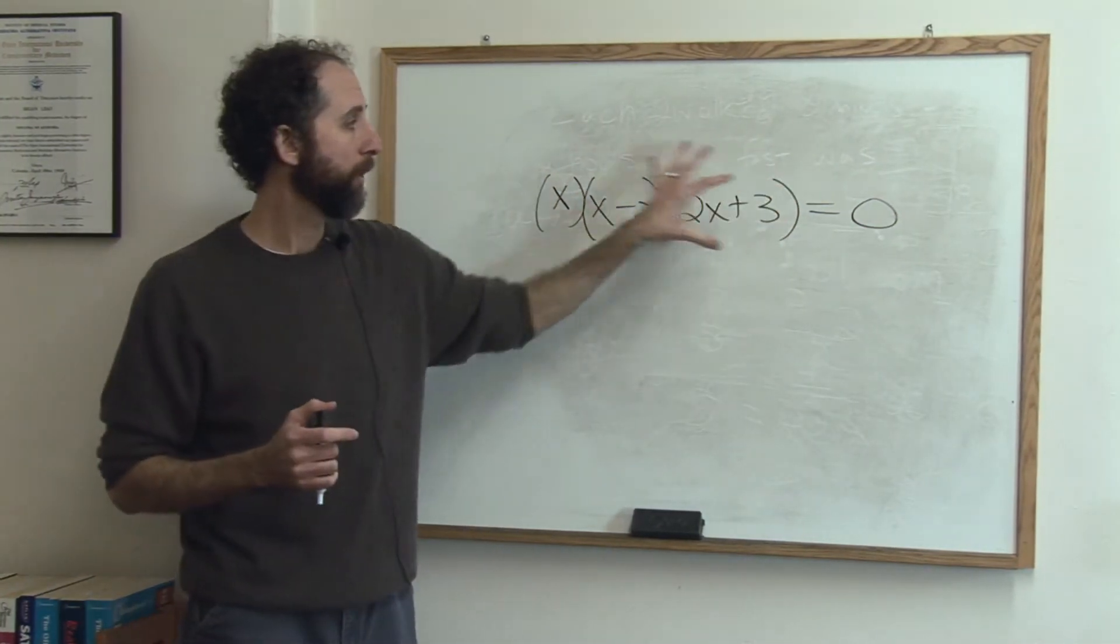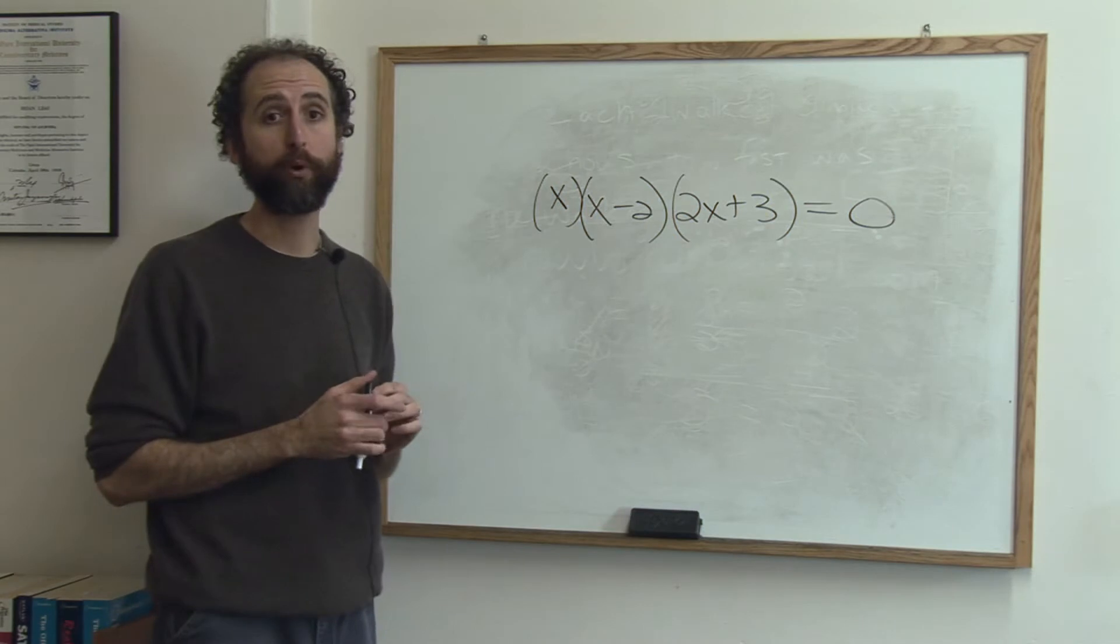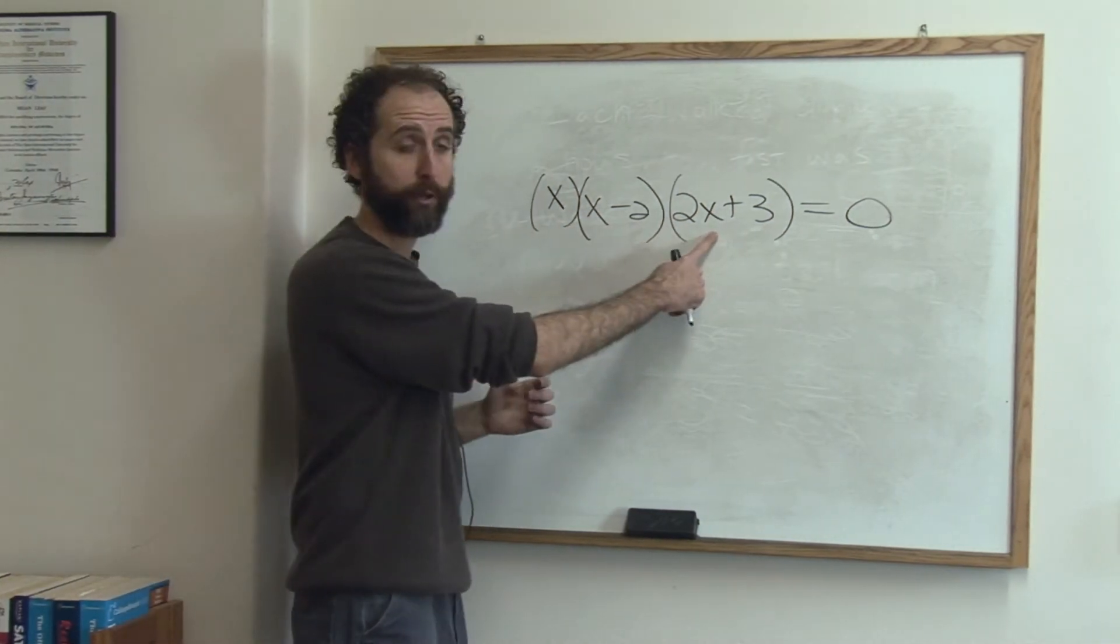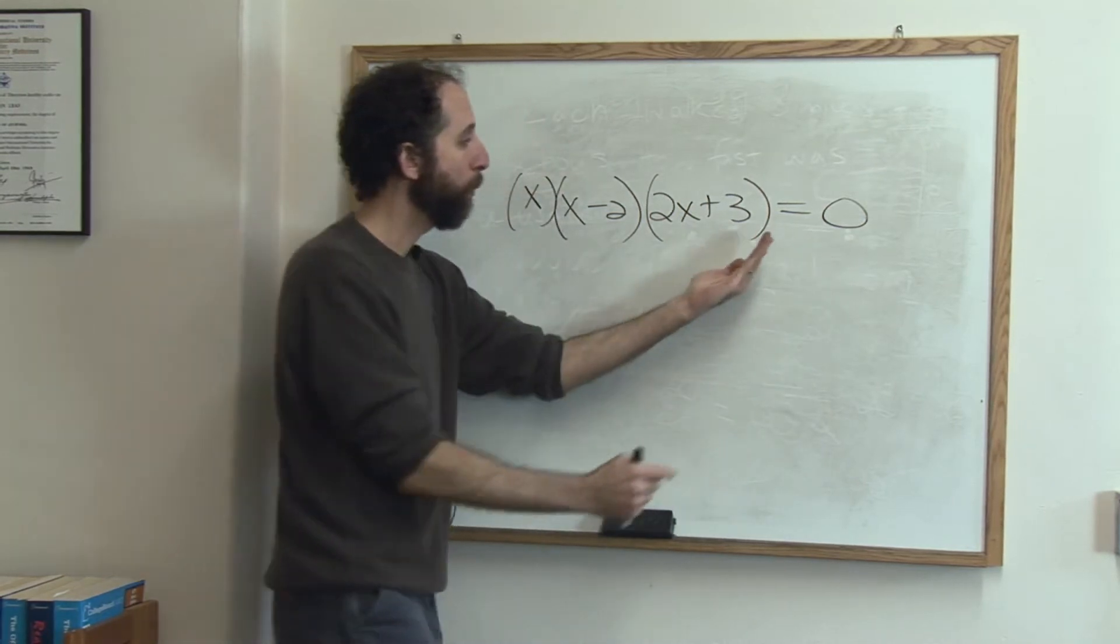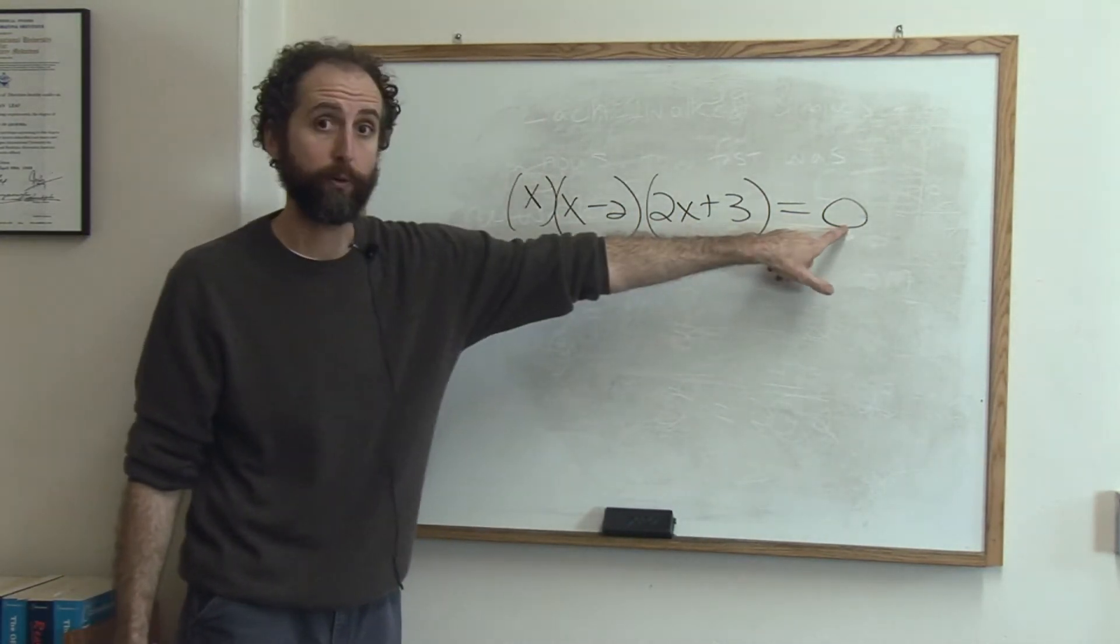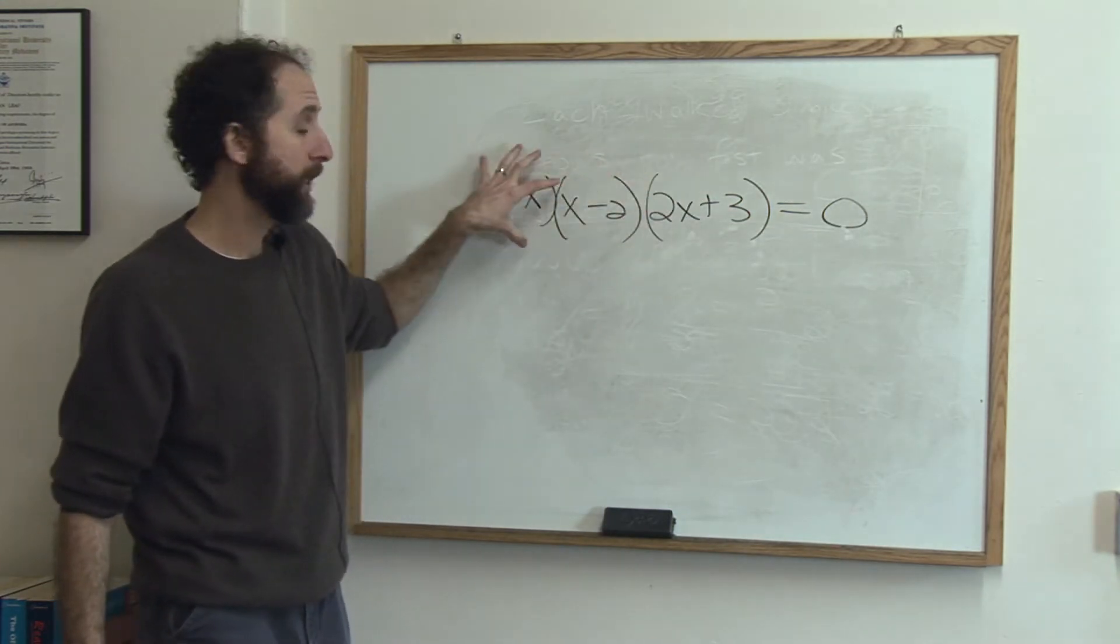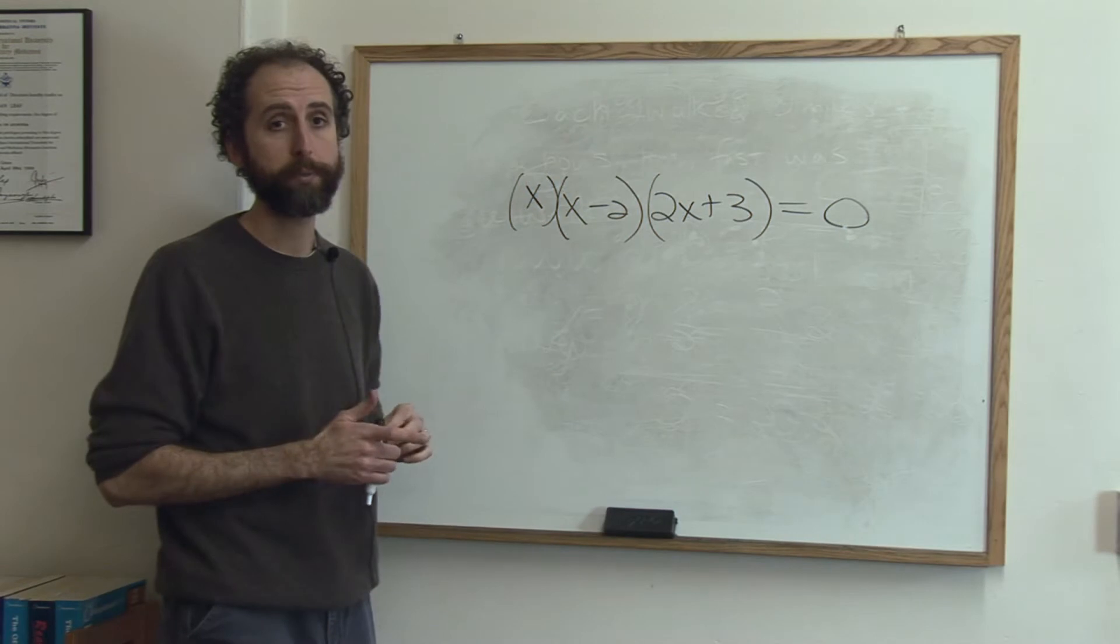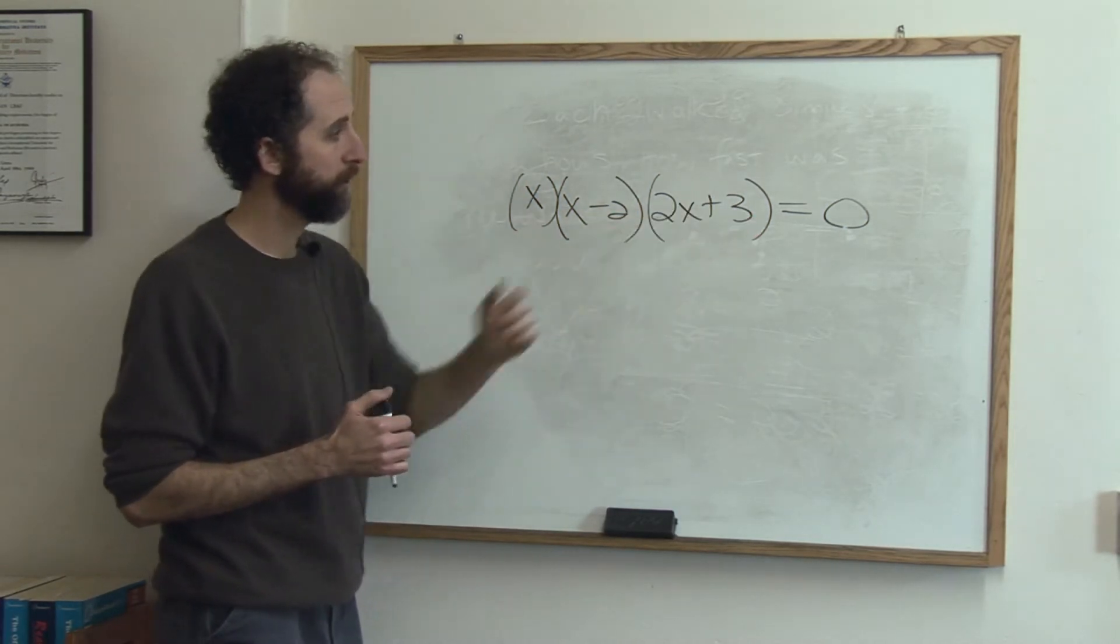So when we do that, the technical term for this is zero product property. It's called that because things multiplied by each other to equal zero, one of them must be zero. The only way to multiply to get zero is for one of these to equal zero. Product means times, multiply. So when you multiply to get zero, something has to be zero.